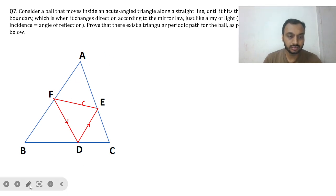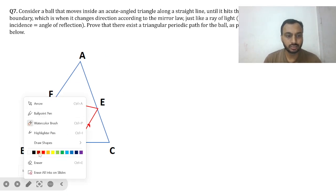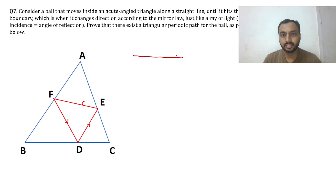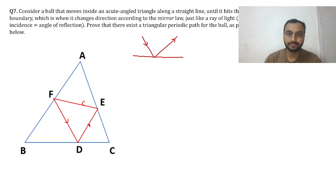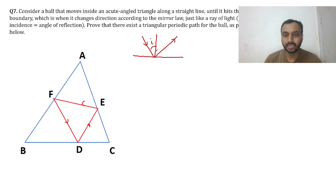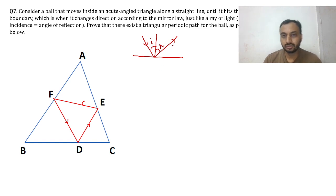First, let's understand the mirror law. If this is the mirror, the incident ray and the reflected ray are drawn. The mirror law says the angle of incidence I is made with the perpendicular to the mirror, and R is made by the reflected ray with the perpendicular. So I equals R.